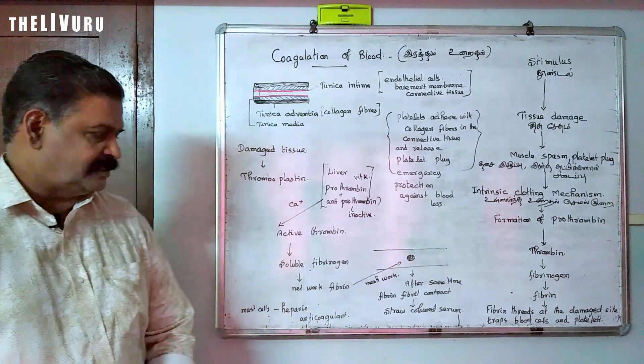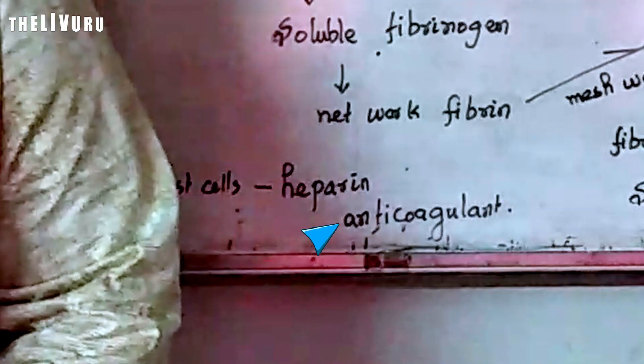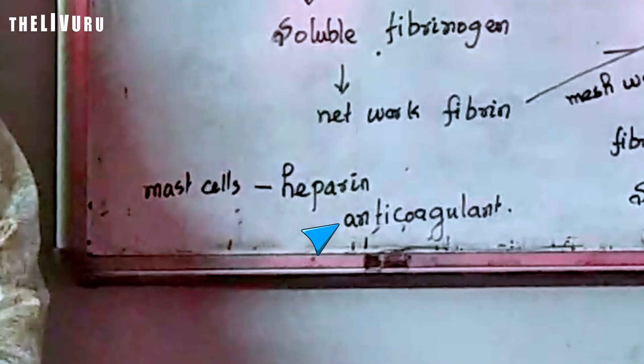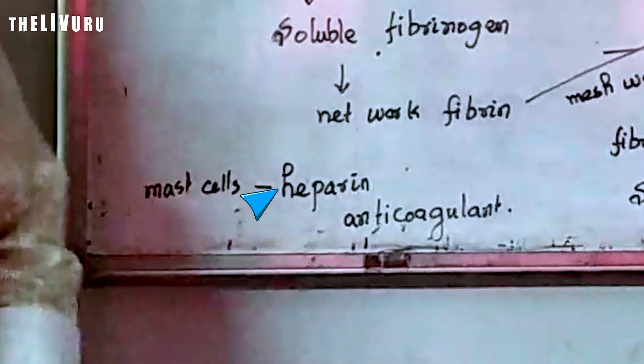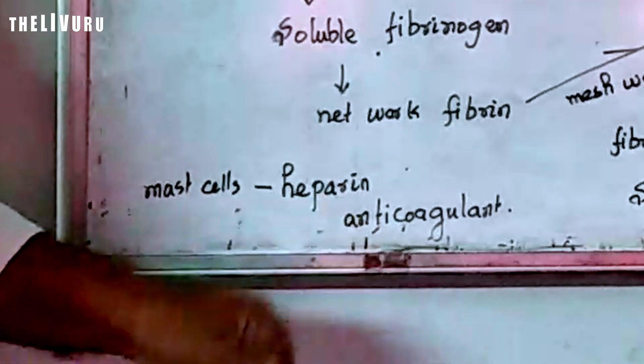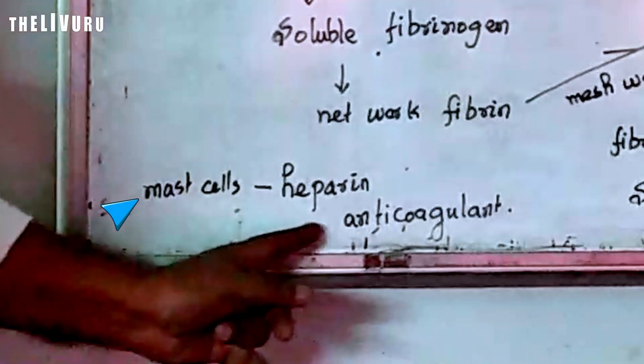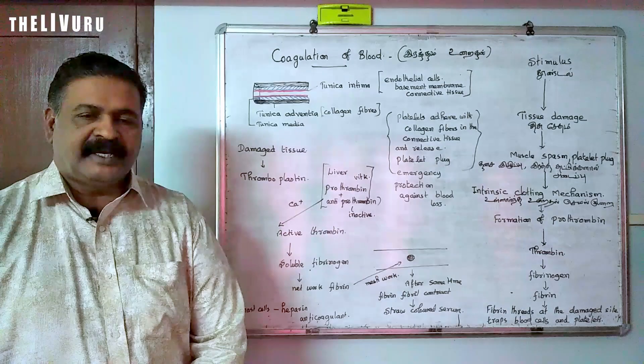That is the anticoagulant which is called heparin. Heparin will be secreted by the mast cells in our blood, keeping blood from clotting inside the vessels under normal conditions.